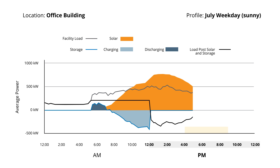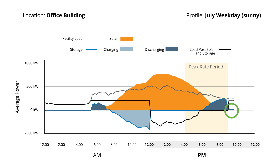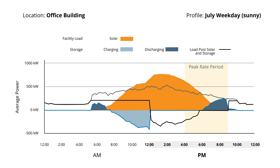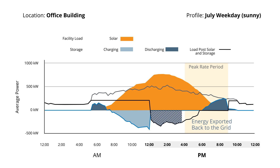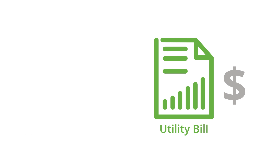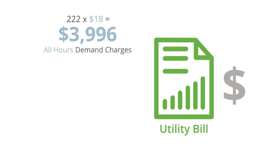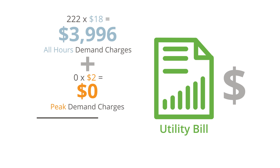When solar energy production is down to the point where the customer would need to use grid energy during the peak rate period, Sunvault DX storage discharges once again to keep peak period demand at zero. Once the peak rate period ends, the batteries discharge just enough to keep the demand at the all-hours level set earlier in the day, and the remaining charge is saved for the following morning. The highest all-hours demand is now only 222 kilowatts, and there's no need to pull any energy from the grid during peak hours. Sunvault DX storage works together with solar to zero out the peak demand charges — something neither solar nor storage could do on their own. In fact, this customer is even exporting during a portion of peak time, which is very beneficial when net metering is available. With solar and Sunvault DX storage, this customer is now only paying $3,996 in all-hours demand charges, and no peak demand charges at all.